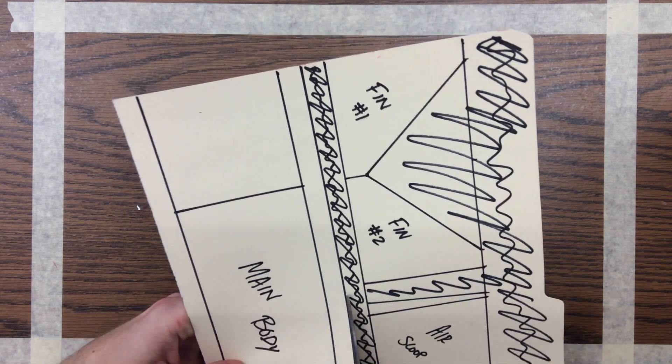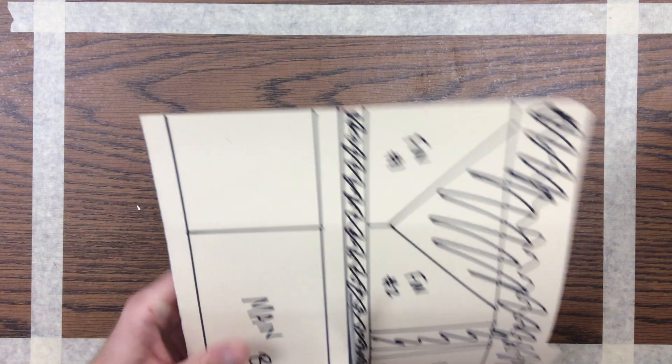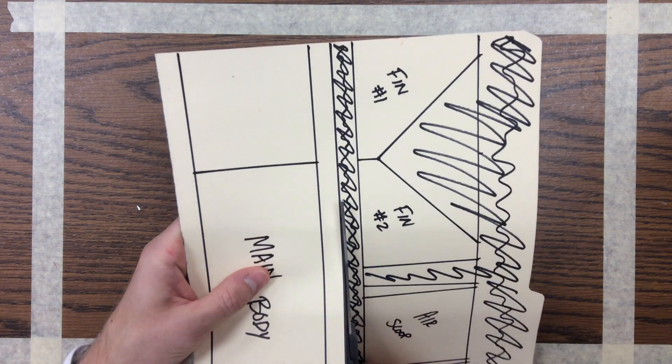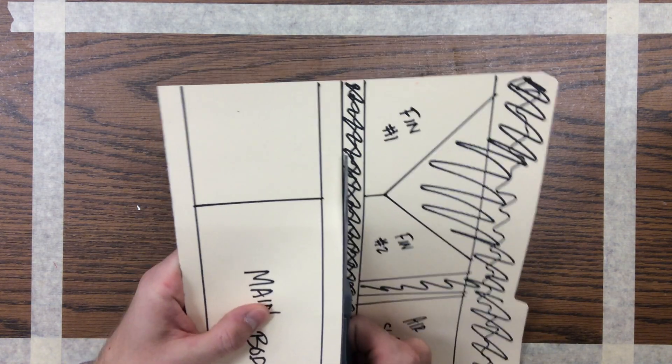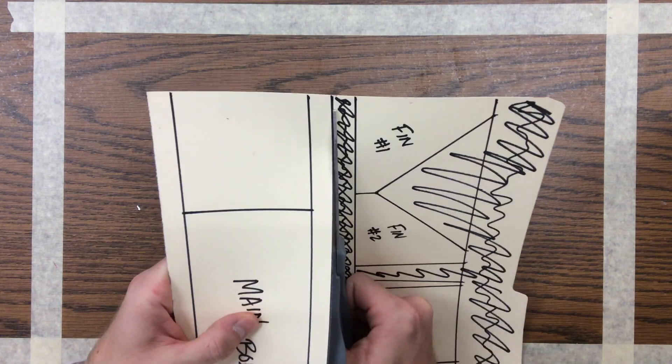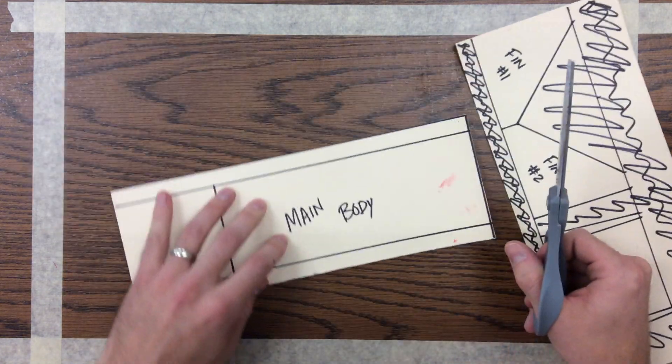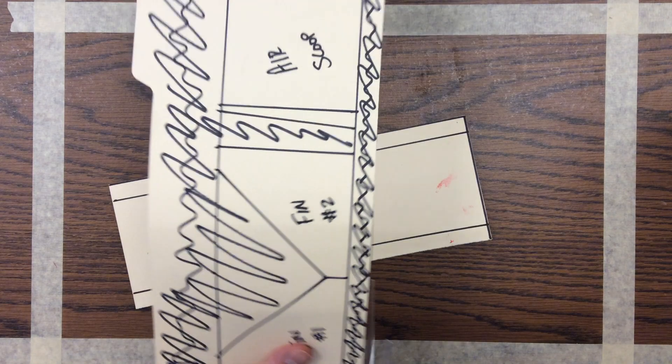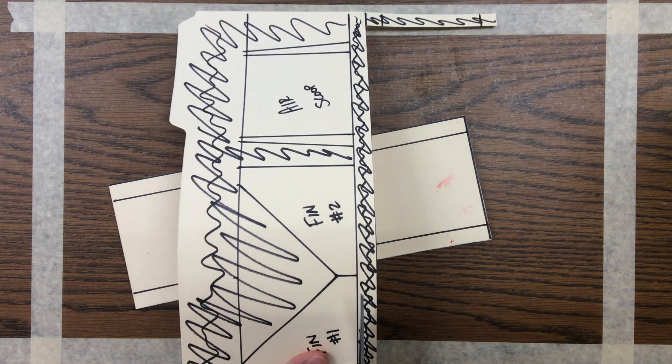Make sure when you're cutting it you're being careful to cut nice straight lines. You don't want to have any crooked lines, any uneven lines, any lines that are not parallel. You want to have all straight, clean cuts.